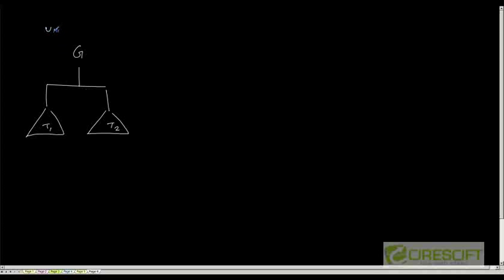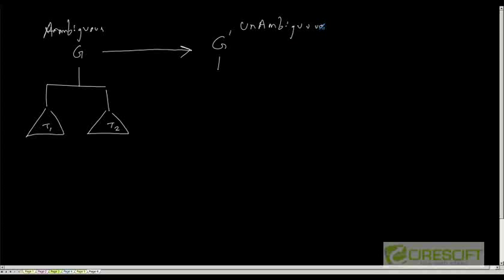Initially, for a given grammar G, we may have two different possible syntax trees T1 and T2 — this is an ambiguous grammar. We use some methods to convert G to G', so that G' is unambiguous. With G', the tree created will always be either T1 or T2 consistently. The question then is: how do we know that a grammar is ambiguous?